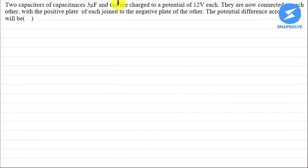The potential difference across each will be—we have two capacitors here, which is 3μF and 6μF, charged individually with the potential of 12V. Now they are connected to each other such that the positive plate is connected to the negative plate of the other. We will find the potential difference between each. First, we will write the given data.